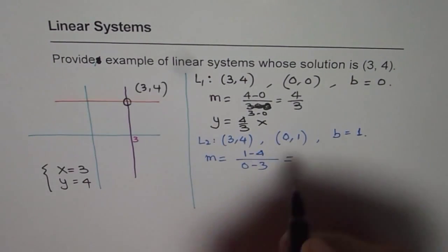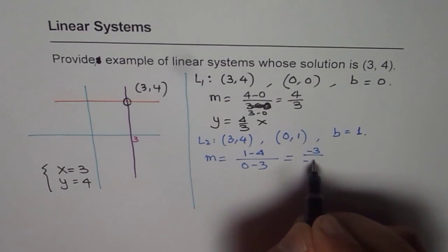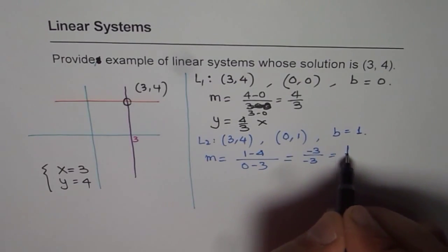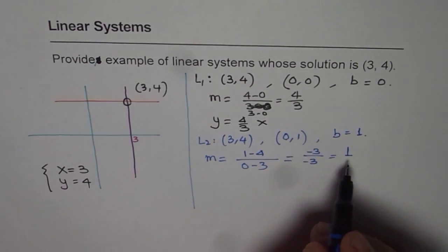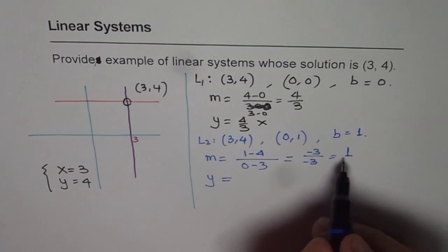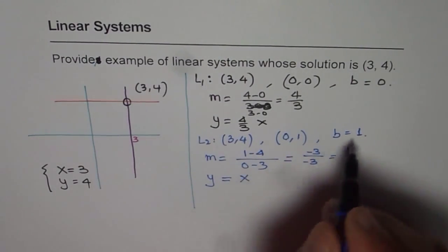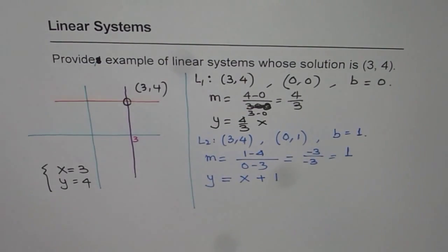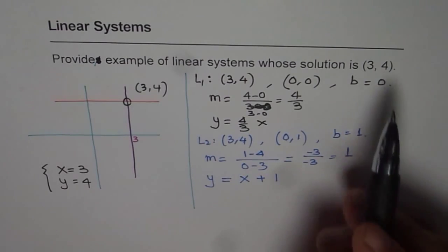Now, here we get 1 minus 4 is minus 3, divided by minus 3, which gives a slope of 1. Now, since slope is 1, I can write the equation of this line as y equals to m is 1, x, and b is 1, x plus 1.